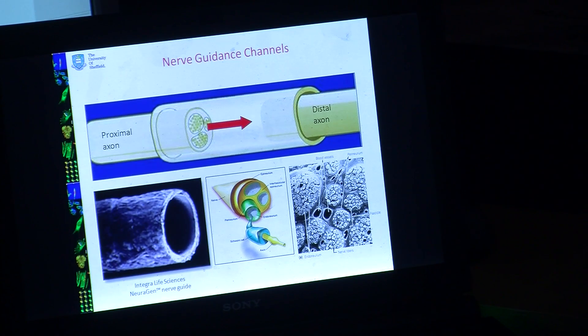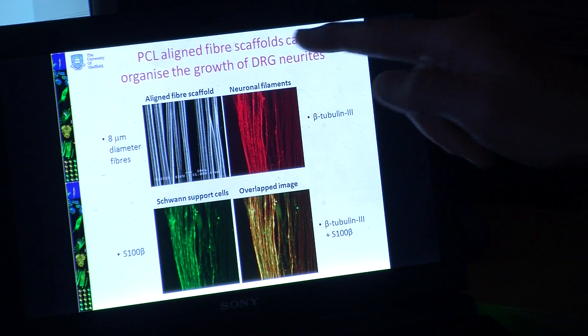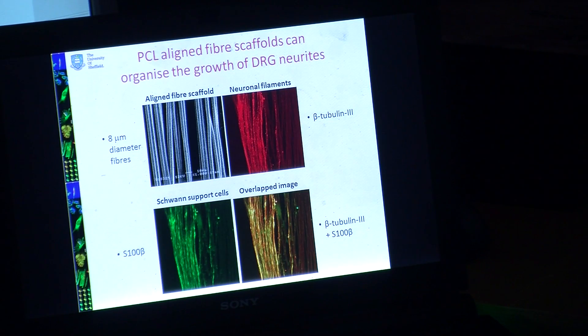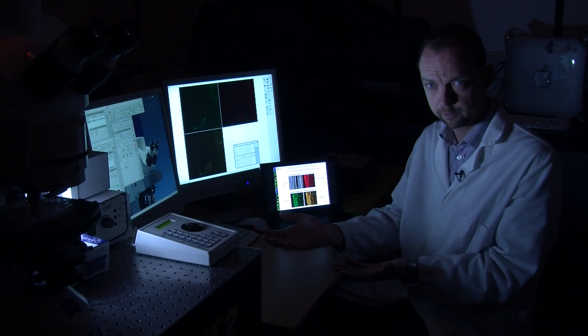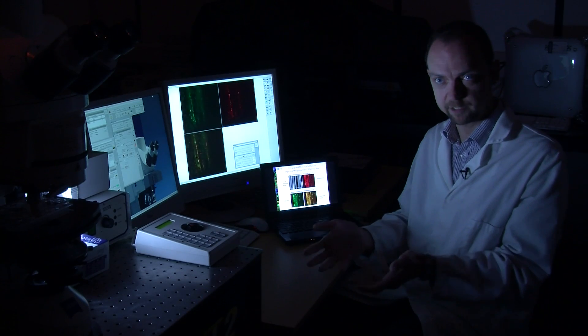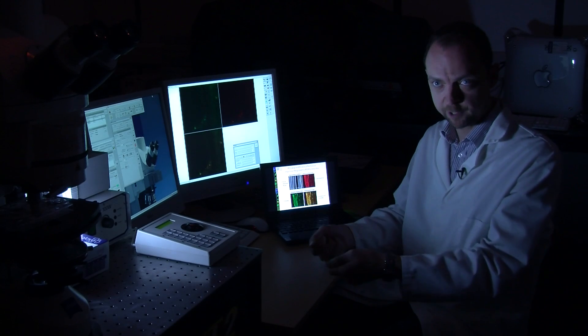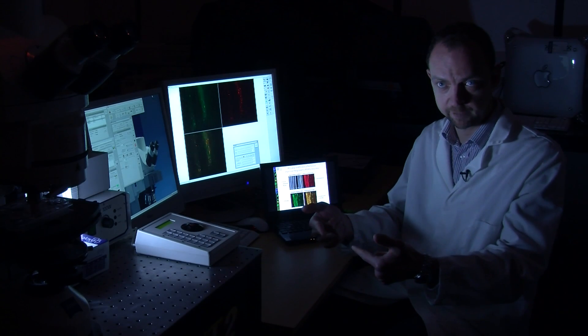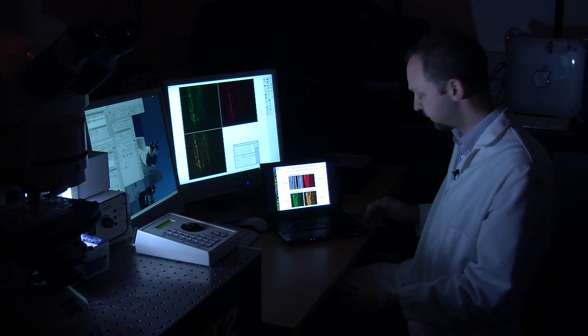That's really stage one. That tells us that we've got this scaffold, this support structure that directs hundreds, if not thousands, of individual nerve cells in the right direction. The next stage is to make a device, a tube, that contains that scaffold inside so that the surgeon can implant it between those two severed nerve ends.